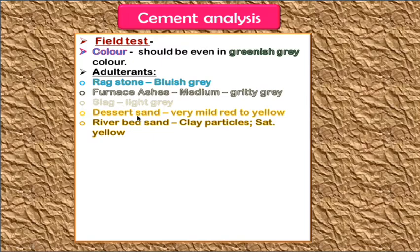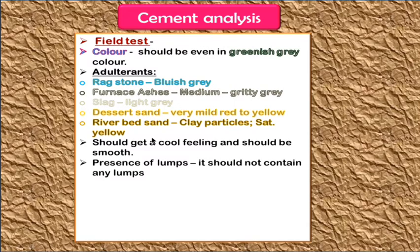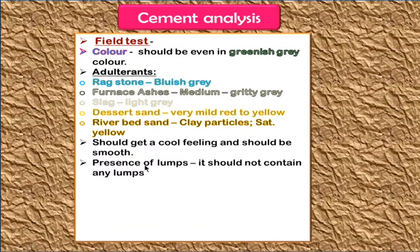Desert sand added gives a wild red to yellow color, while riverbed sand introduces clay impurities and gives a saturated yellow color. In the touch field test, good quality cement feels cool and smooth like face powder. If there are lumps present, avoid the cement — lumps indicate high moisture content and the cement is not fit for construction.